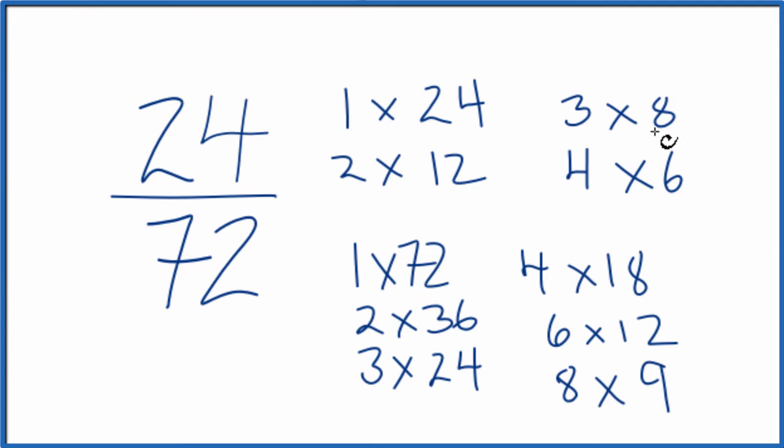So I see 12, and is there anything larger? Yep, 24. So 24 goes into 24 itself and 72. So let's divide 24 by itself and then divide 72 by 24, and we'll simplify the fraction.